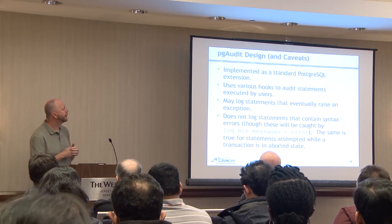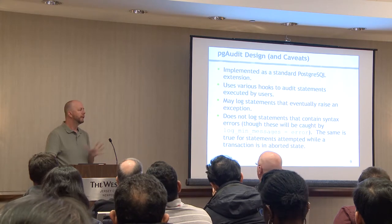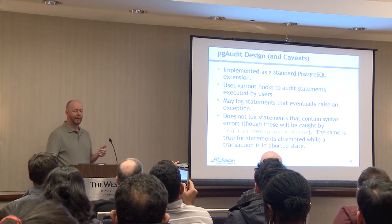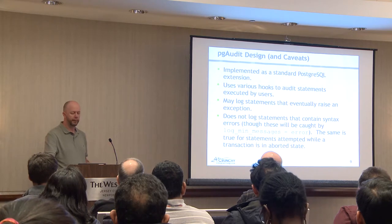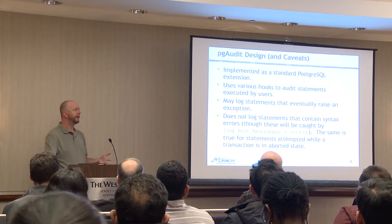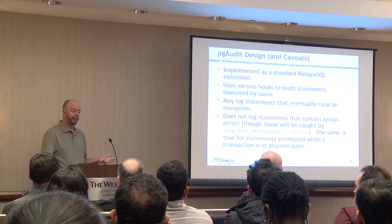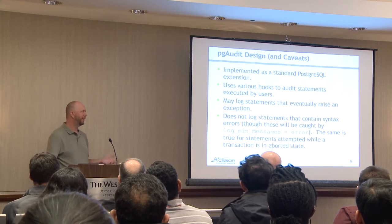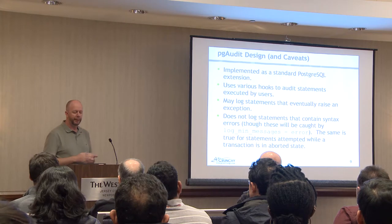PG Audit is implemented as a Postgres extension. It's open source, and several support companies provide packages for it including Crunchy Data. It's supported on 9.5 and 9.6, using features introduced in 9.5 especially event triggers. It uses essentially every hook in the book — executor hooks, utility hooks, object hooks — and what it's doing is trying to figure out what Postgres is doing internally from the information coming through all these hooks. It works extremely well and gives you an incredible amount of detail.